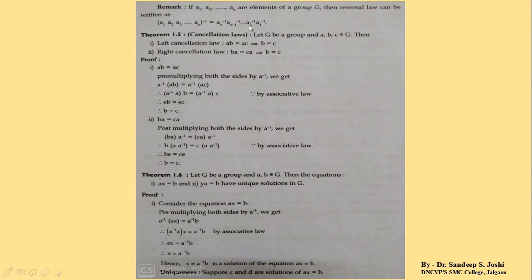Another theorem: cancellation laws. Let G be a group and A, B, C belong to G. There are two laws: (1) Left cancellation law: if AB = AC, then B = C. (2) Right cancellation law: if BA = CA, then B = C.